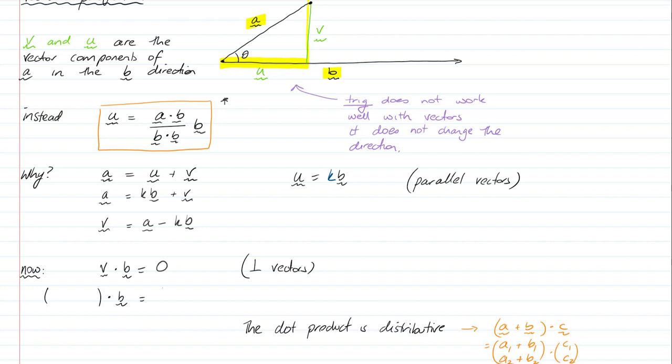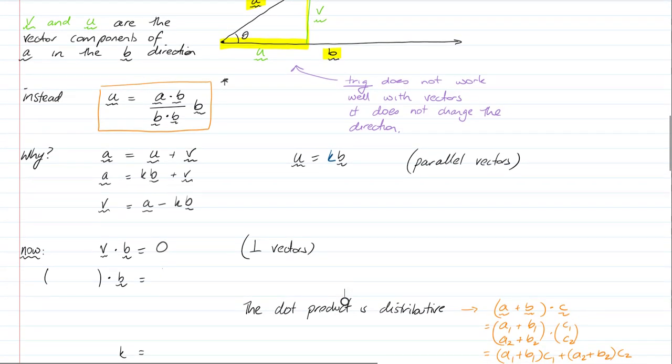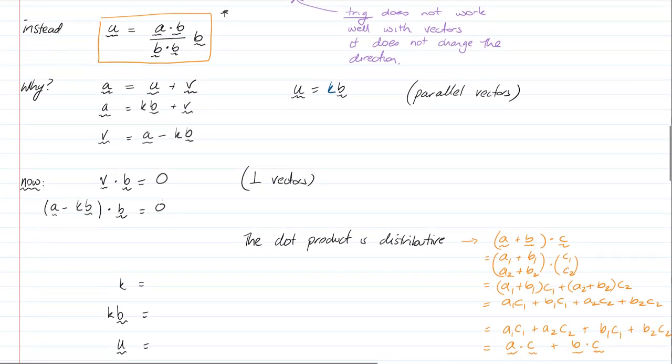We also know about V. V is A minus KB, and we know that's still equal to zero. Now we can do what's called the distributive law and get A dot B minus KB dot B equals zero.